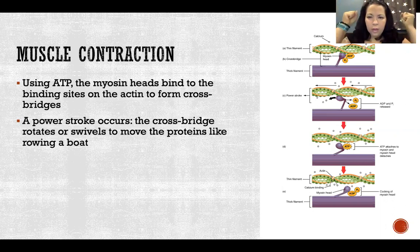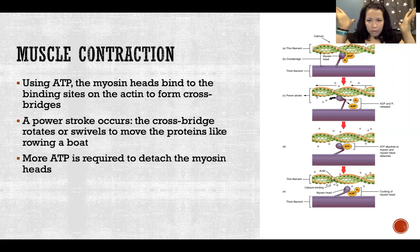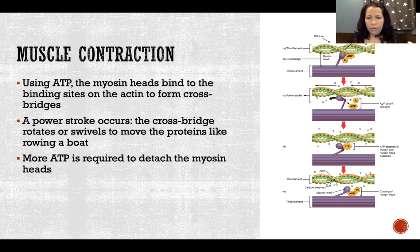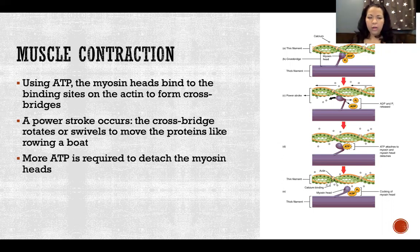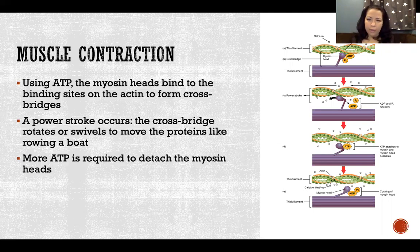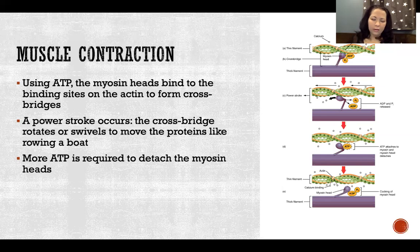Using ATP, the myosin heads will then detach. If there are still action potentials arriving at the muscle, it will detach and grab and pull again. We have multiple cross-bridge cycles with power strokes occurring, so the sarcomere shortens step by step. One power stroke does not cause full contraction; it requires constant action potentials causing multiple power strokes one after another until the sarcomere reaches its shortest length. It requires ATP to form the cross bridge, ATP to detach it, and more ATP to form the next one.